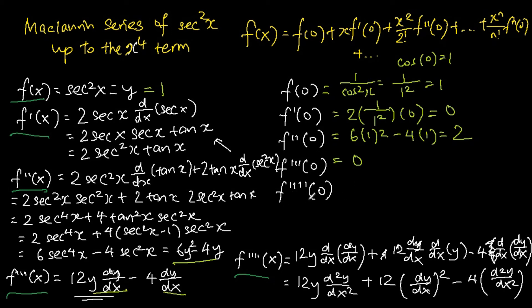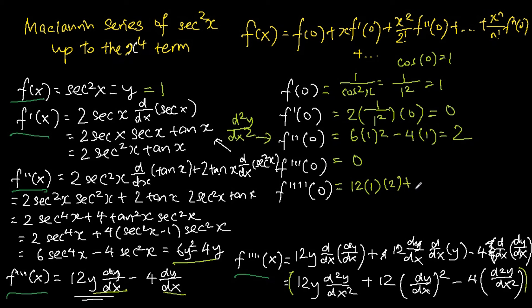For f quadruple prime(0), we substitute into 12y d²y/dx² plus 12(dy/dx)² minus 4 d²y/dx². Here d²y/dx² corresponds to f double prime(0) which is 2, y equals 1, and dy/dx equals f prime(0) which is zero. So we get 12 times 1 times 2 plus 12 times 0 squared minus 4 times 2, giving us 24 minus 8, which equals 16.